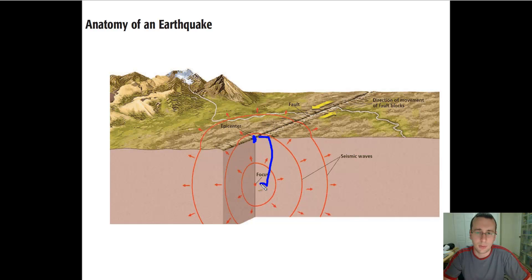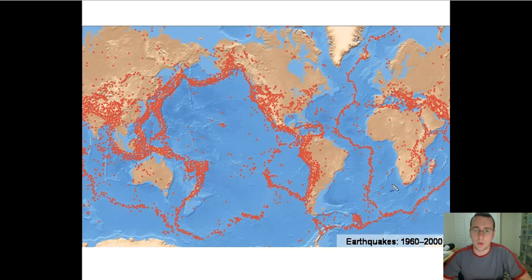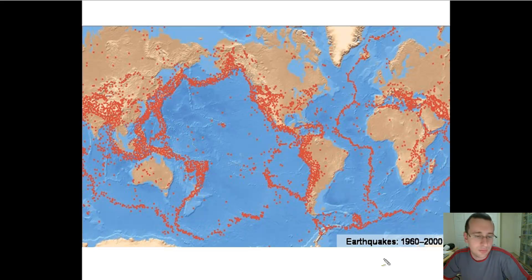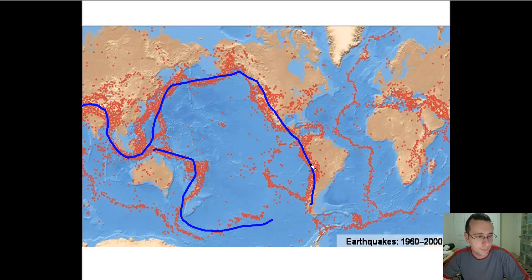We're going to talk about that in a later video in the lecture series. For now, all you need to understand is the basic pieces of the earthquake and where they all lie. The most common locations where earthquakes will be found are along boundaries. This picture shows all earthquakes that happened between the 1960s and 2000s, and the vast majority happen along folding caused by convergence — these convergent boundary earthquakes.